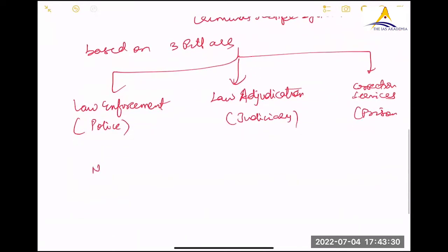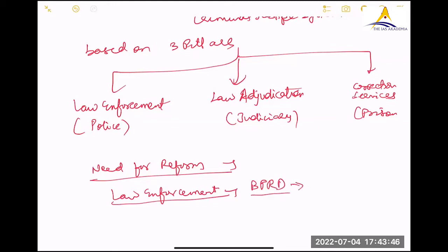Now, need for reform. Law enforcement or police. Somebody mentioned BPRD data. Bureau of Police Research and Development. That in cases of crime against women. The conviction rate is only 21 percent. Generally, the conviction rate is 41 percent. But in crime against women, there is only conviction rate is only 21 percent. So, there is poor conviction or poor protection of women's rights.